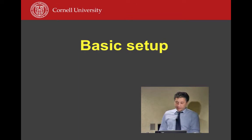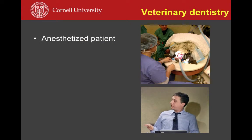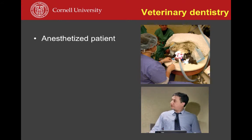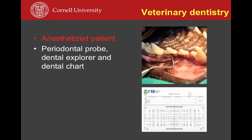For the basic setup, in order for us to do dentistry in small animals, dogs and cats, we're going to need an anesthetized patient. Unlike in humans, everything that happens — even the diagnostic process — is mostly performed under general anesthesia. We'll also need a few basic tools: the periodontal probe and a dental explorer, which are two very affordable and easy-to-use instruments yet provide a lot of very useful information.